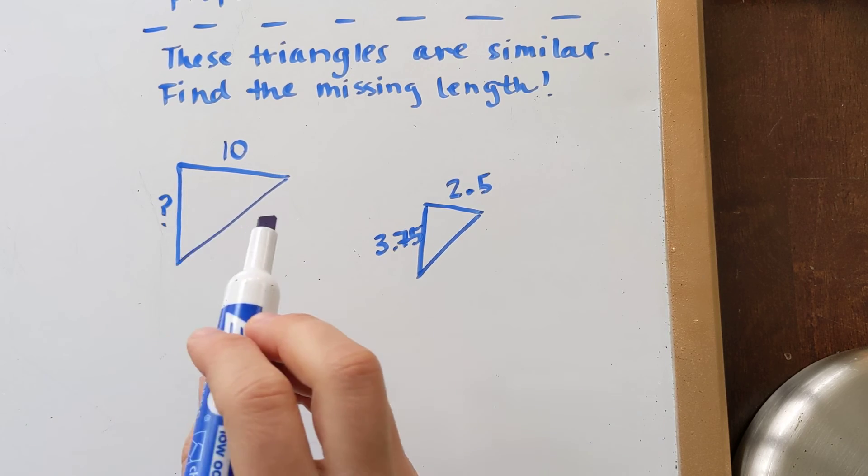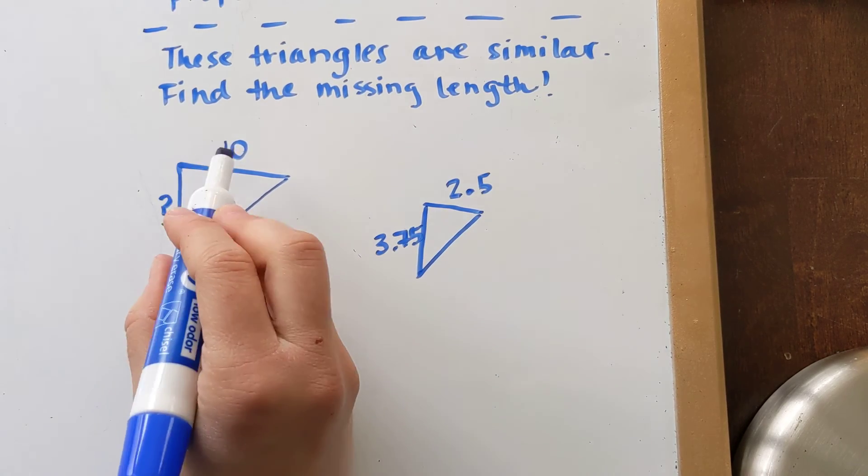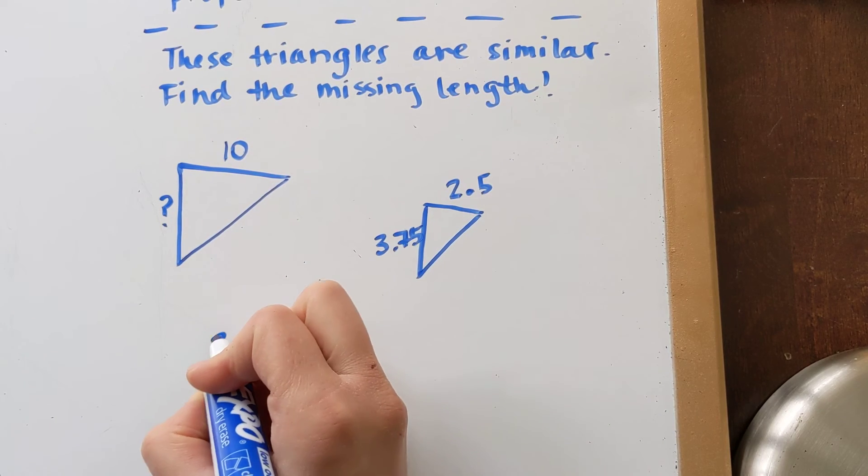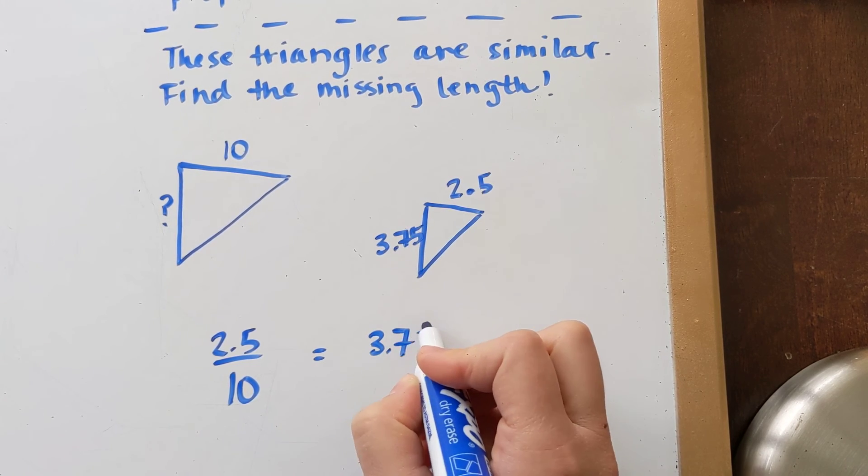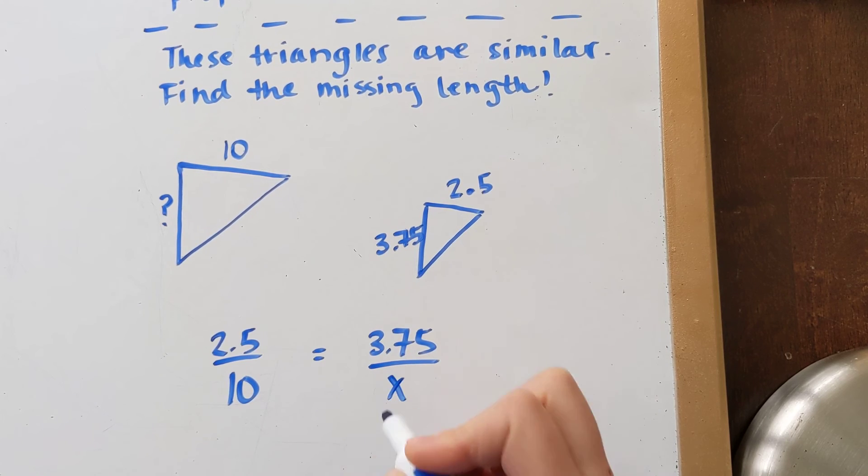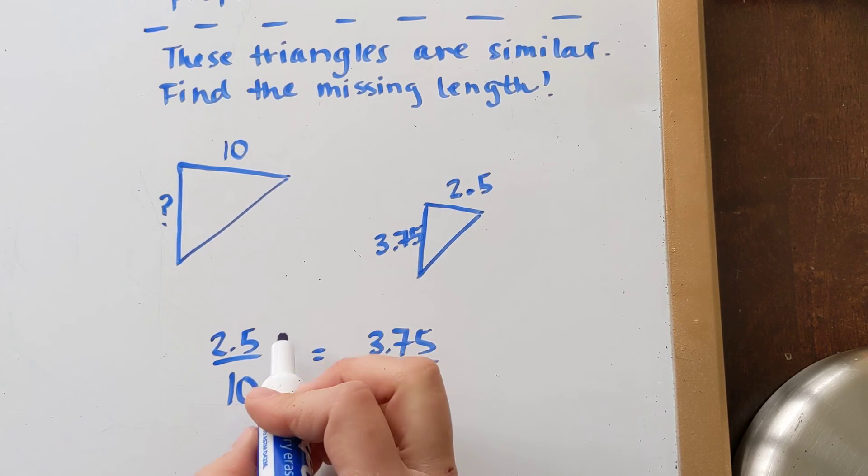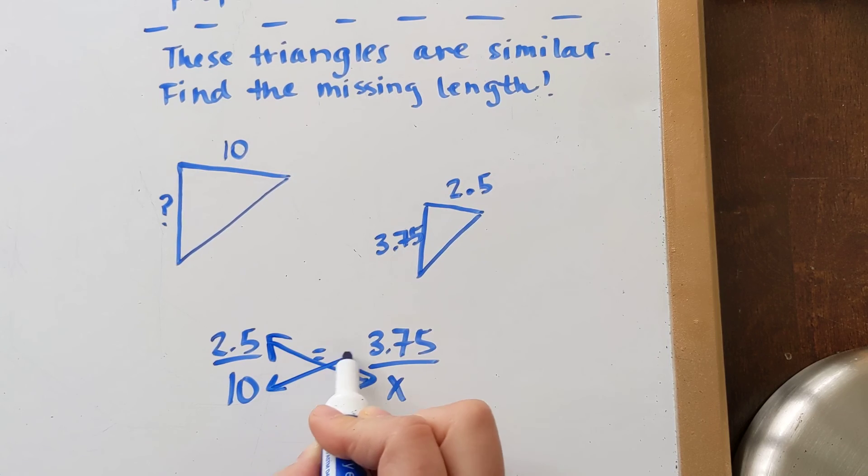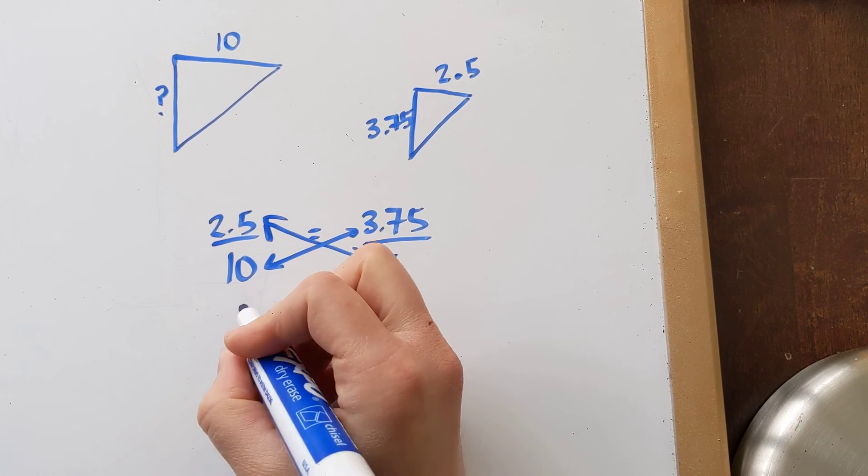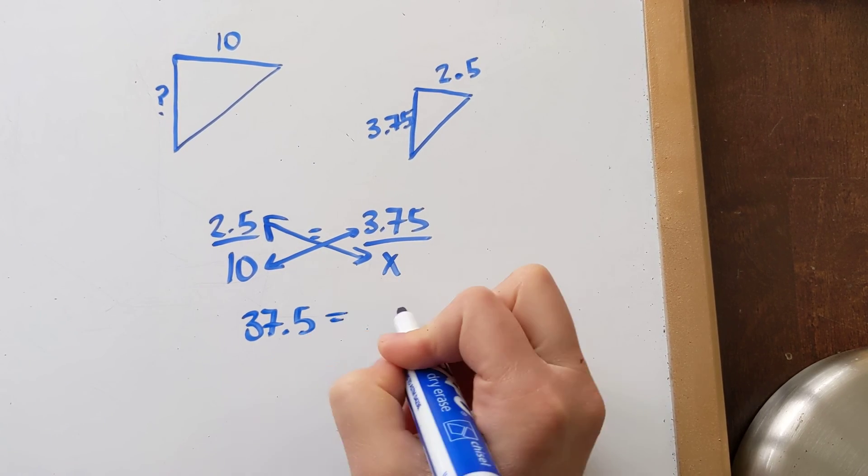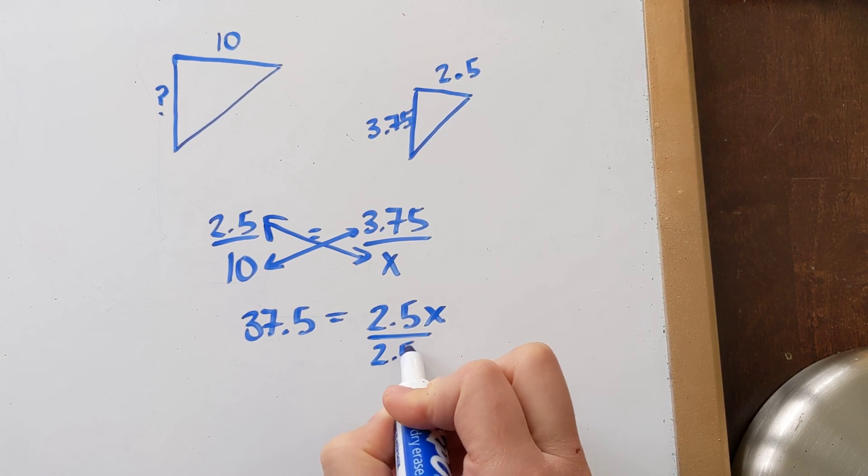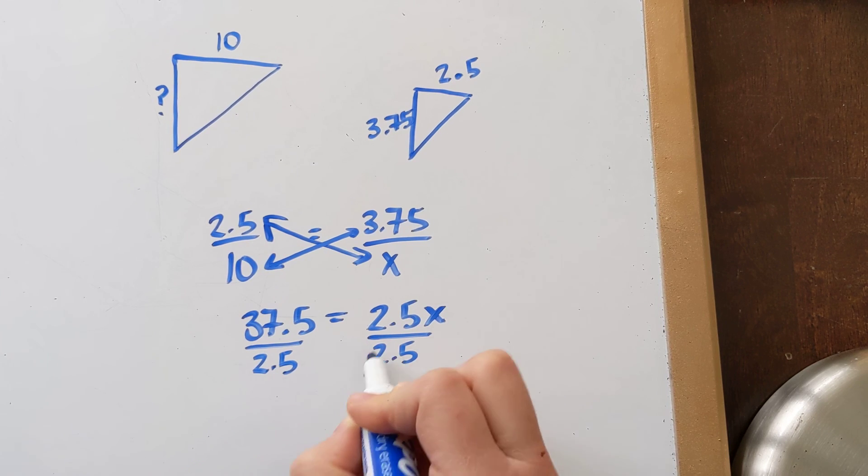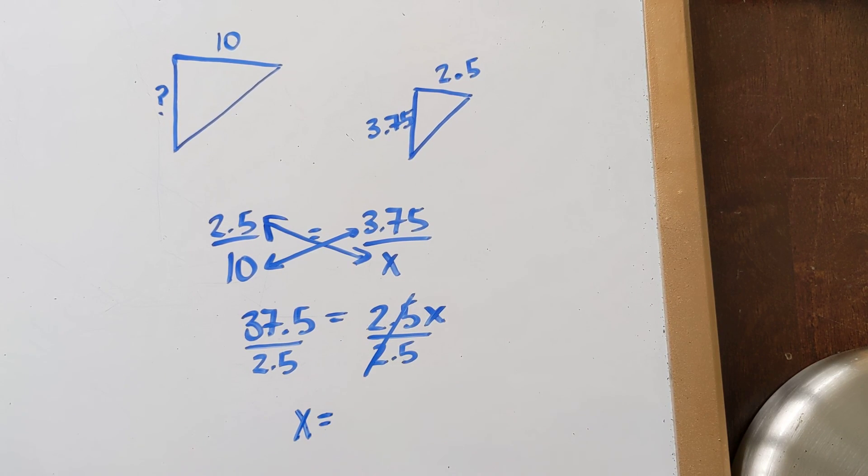Okay, so I want to set up ratios with my corresponding sides. I am going to set up 2.5 over 10, and then 3.75 over my missing angle which I will just call x. You have to cross multiply. So let's do that, 2.5 times x, 10 times 3.75. I would get 37.5 is equal to 2.5x. My last step would be dividing, and I end up with x is 15.